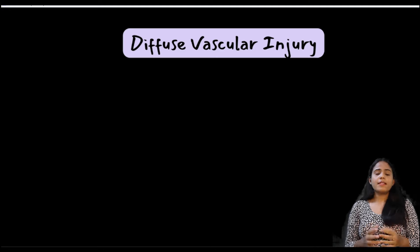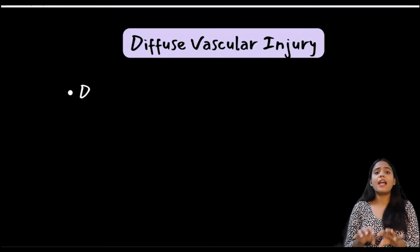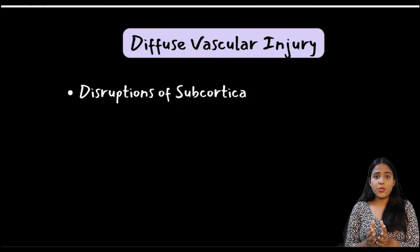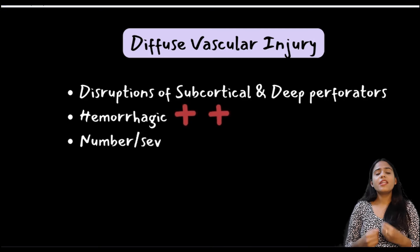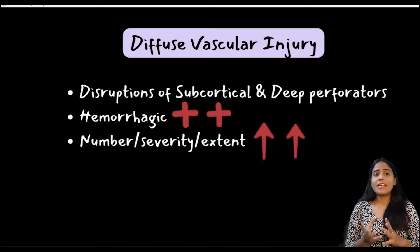The next entity is diffuse vascular injury. It is an extreme form of diffuse axonal injury where, along with stretching of the axons, there is disruption of the adjacent subcortical and deep perforating vessels. Radiologically, the only difference is that these lesions are hemorrhagic and much greater in number, severity, and extent compared to a DAI.